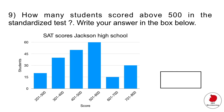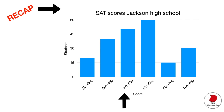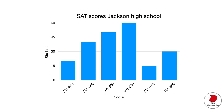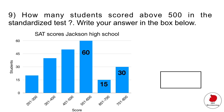Question 9 is a fill-in-the-blank requiring you to interpret a bar graph showing SAT scores for a high school. The question asks how many students scored above 500. Read the title, then check the y-axis for number of students and the x-axis for scores. Follow each bar to the top and read left to find the value. The three bars above 500 show 60, 15, and 30 students respectively. Adding those gives you 105.